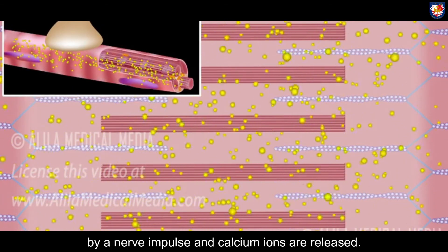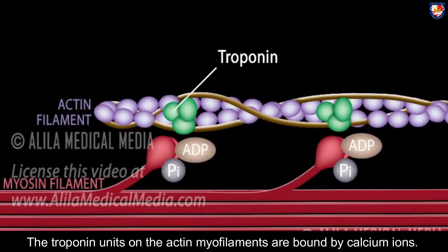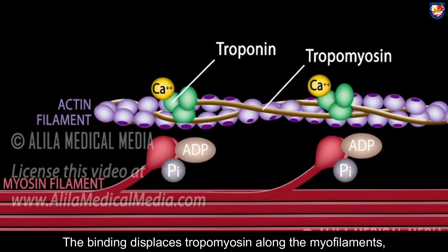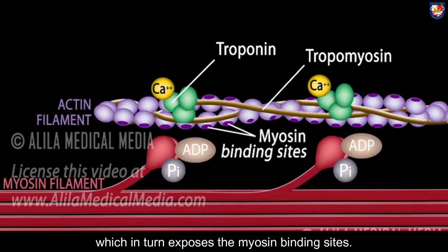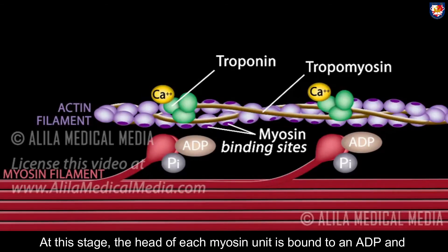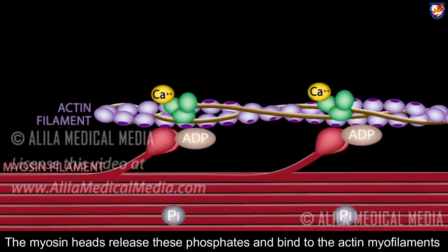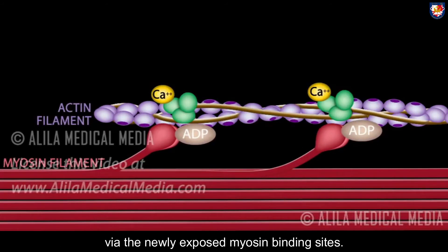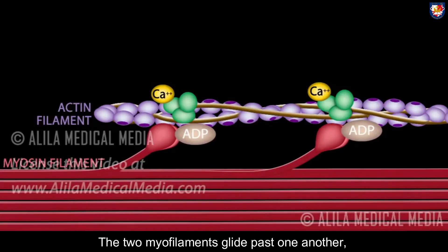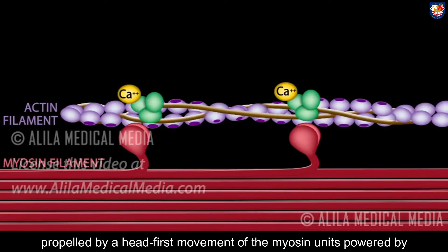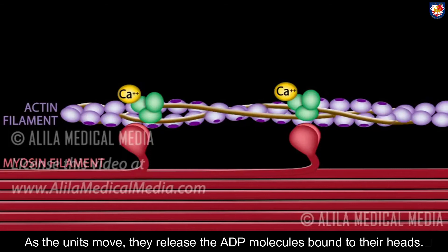Muscle contraction is initiated when muscle fibers are stimulated by a nerve impulse and calcium ions are released. The troponin units of the actin myofilaments are bound by calcium ions; this binding displaces tropomyosin along the myofilaments, which in turn exposes the myosin binding sites. At this stage the head of each myosin unit is bound to an ADP and phosphate molecule remaining from the previous contraction. The myosin head releases these phosphates and binds to the actin myofilaments via the newly exposed myosin binding site. The two myofilaments glide past one another, propelled by a head-first movement of the myosin units powered by chemical energy stored in their heads.